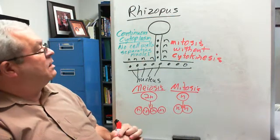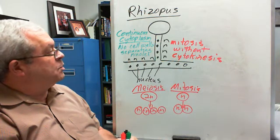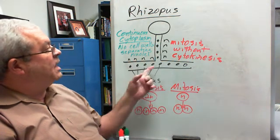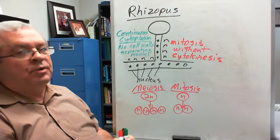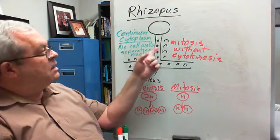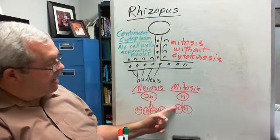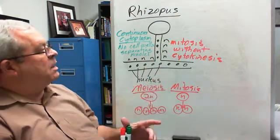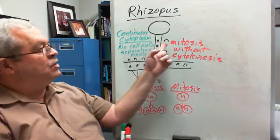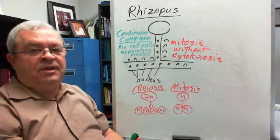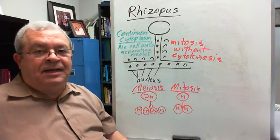So what we have here is the unusual aspect of the Rhizopus mycelium: continuous cytoplasm with no cell walls separating nuclei. These nuclei came into being by haploid mitosis without cytokinesis — division of the nucleus without division of the cells.